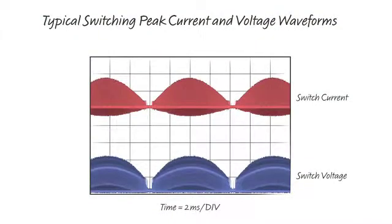This picture shows the peak switch current and voltage waveforms for a 25 watt flyback converter. Notice how the peak current follows in proportion to a 60 Hz input voltage line.